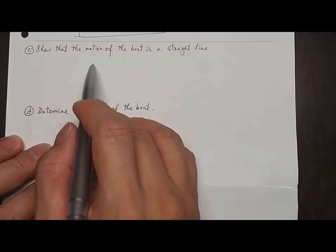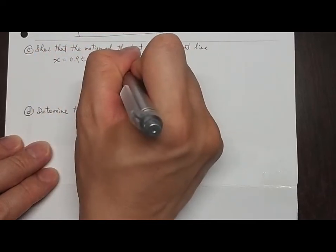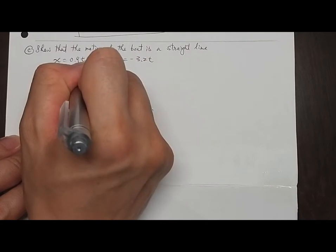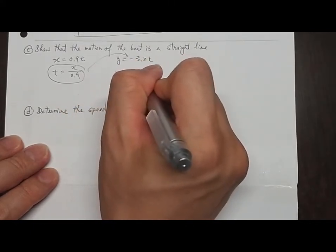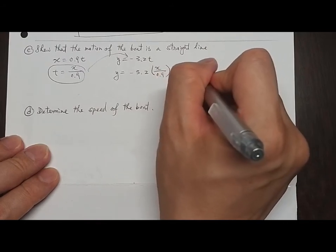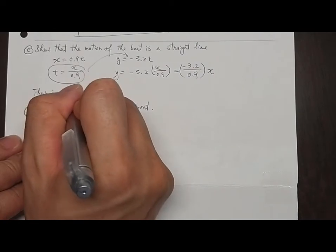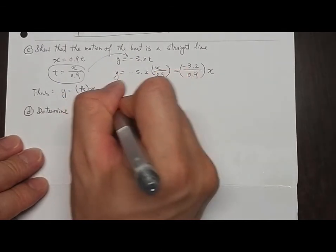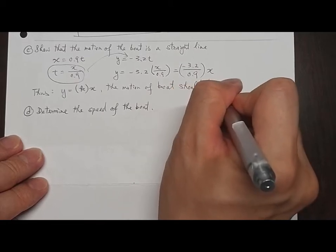Part c: Show that the motion of the bowl is a straight line. Since x equals 0.9t, t equals x over 0.9. Substituting into y equals −3.2t, we get y equals −3.2 × (x/0.9) equals −(3.2/0.9)x. This is of the form y equals kx, which is a linear equation, so the motion of the bowl is a straight line.